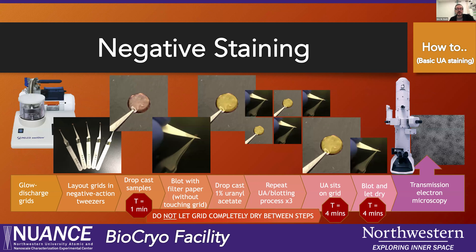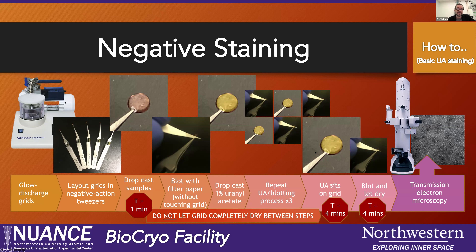So how do you negative stain? It's a very straightforward routine procedure that can be done in about 30 minutes. You begin by glow discharging. It's nice to have an array of tweezers — four or five can make things a lot easier. You start by drop casting your sample onto the grid, then blot it off and do a series of stains — for example, with 1% uranyl acetate. You don't want to let the grid dry between droplets; use filter paper to draw the liquid away slowly, trying not to touch the grid, and as soon as it's almost dry, add more. Letting it dry between steps can result in more collapsing artifacts. This can be done in about 30 minutes, and once your grids are dry, you can get them into the microscope.